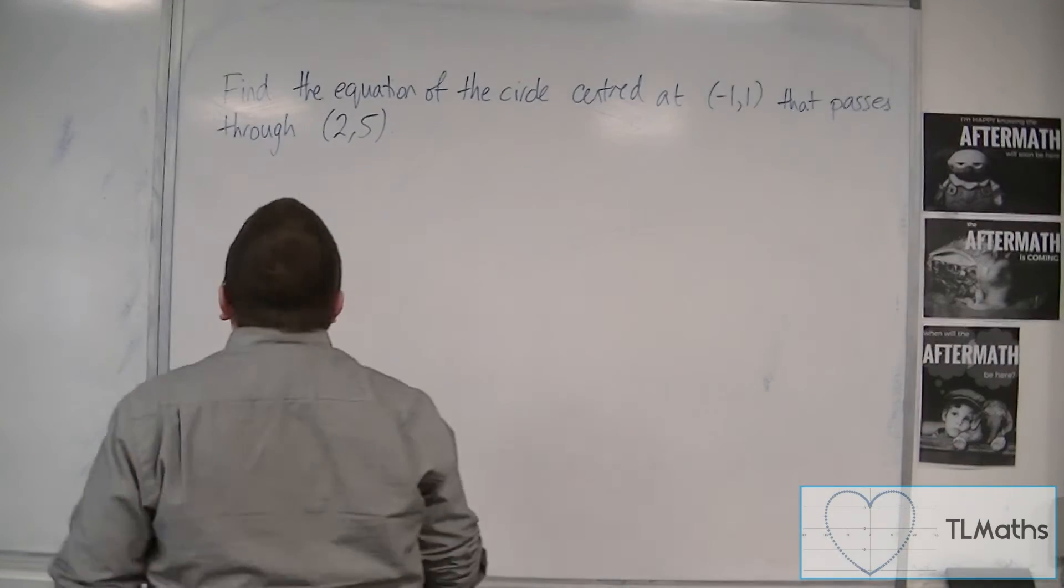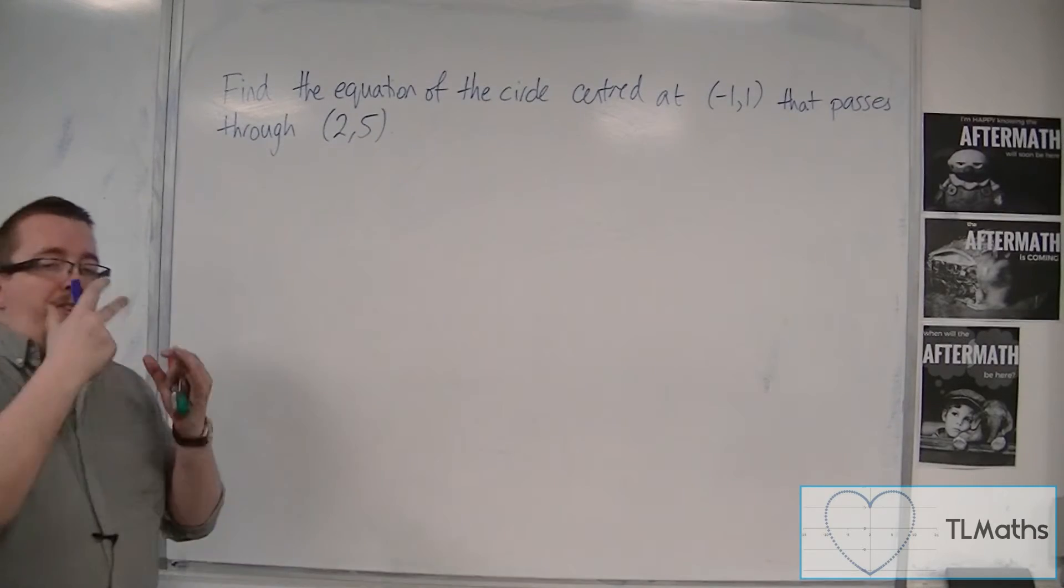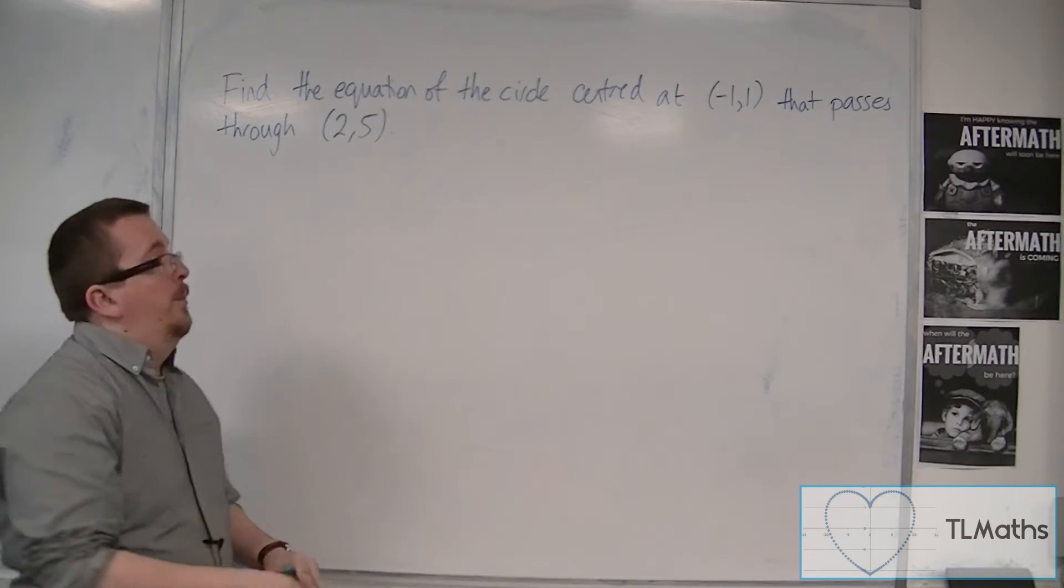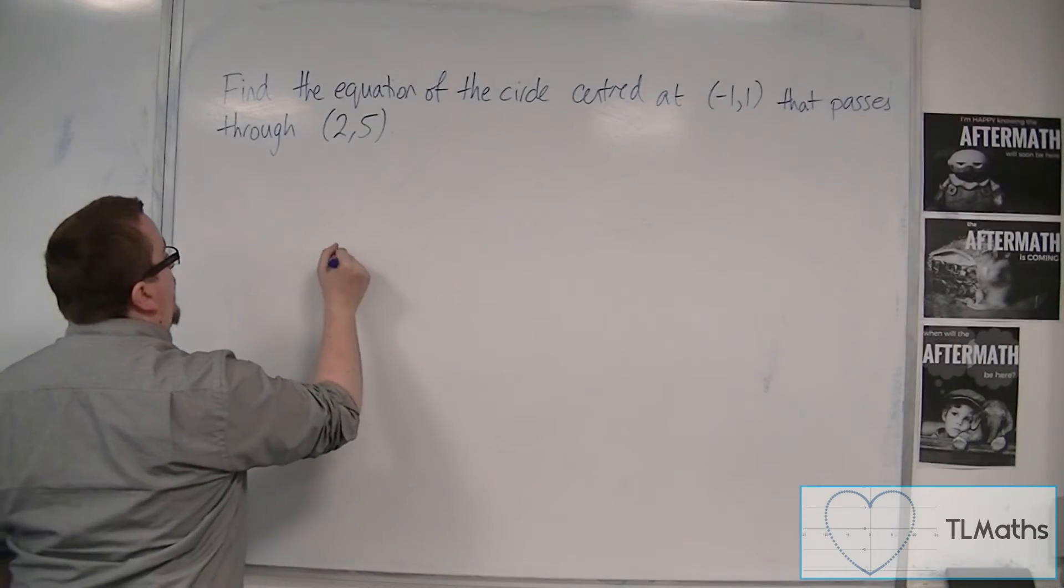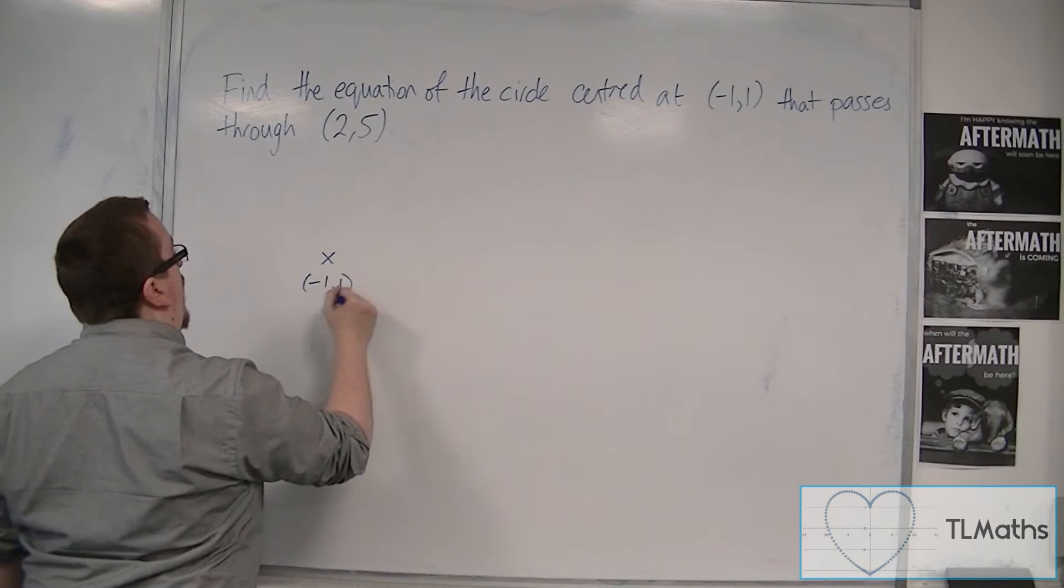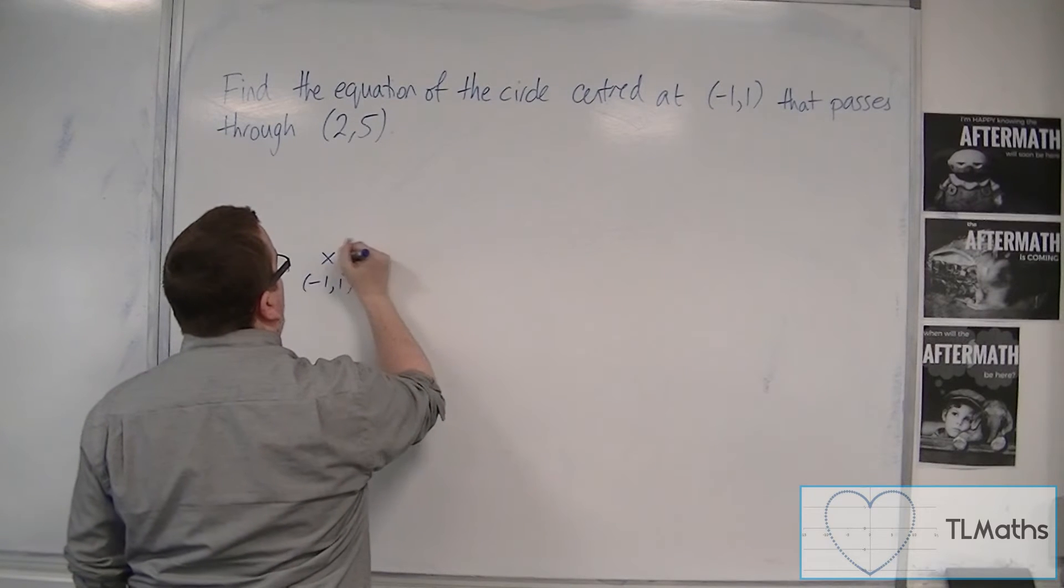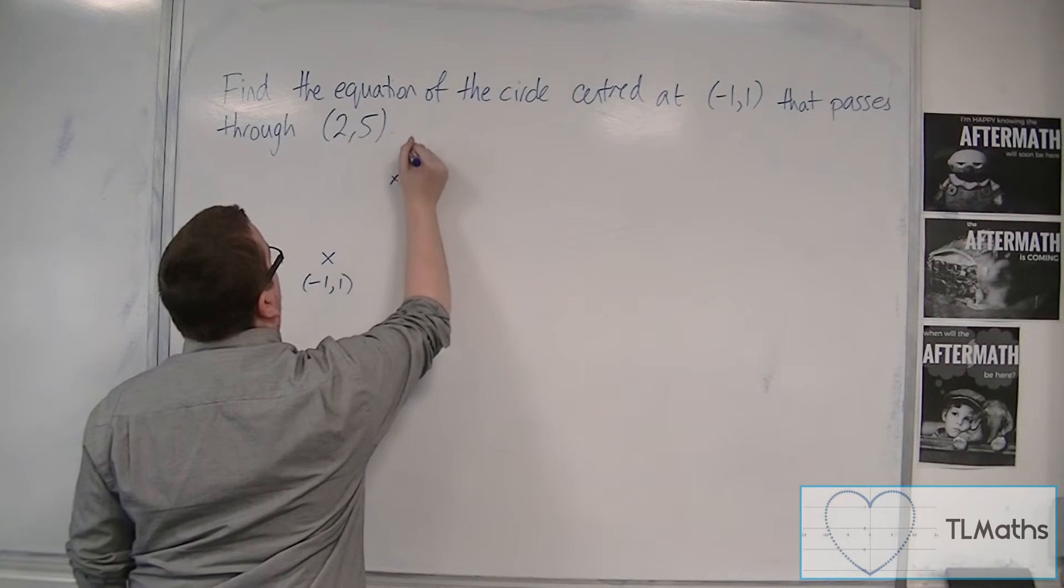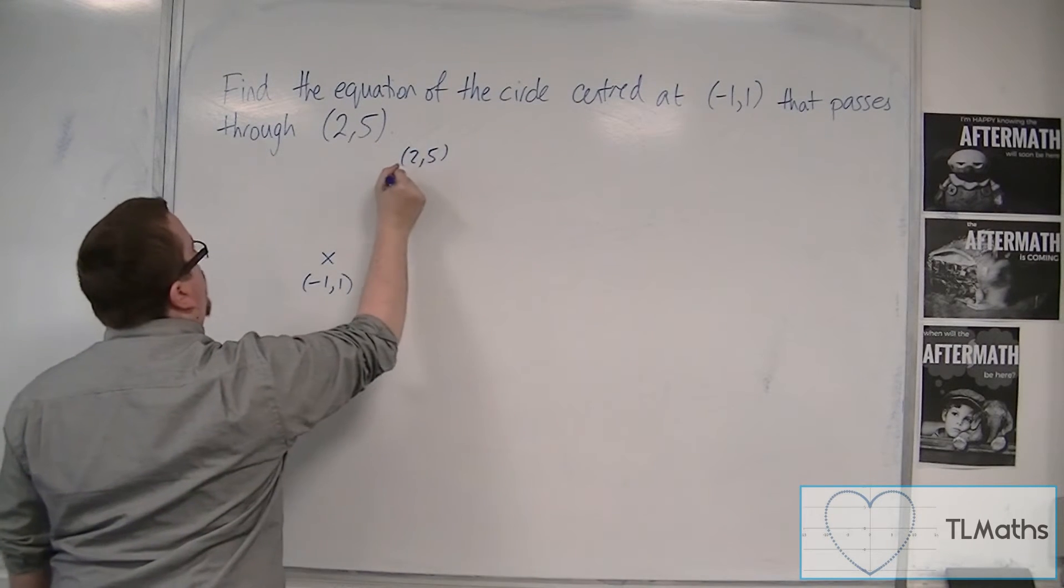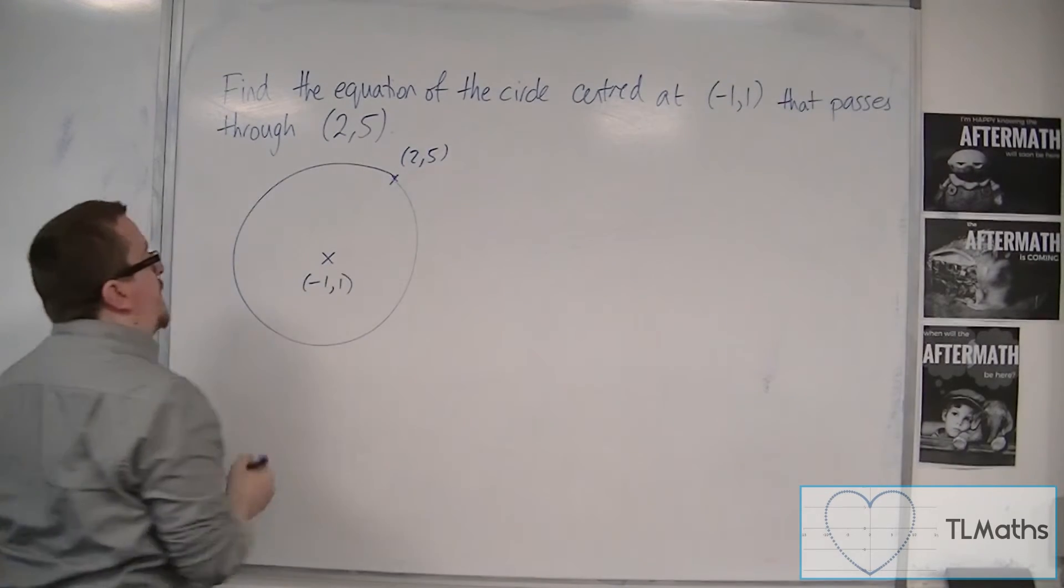In these types of problems, a diagram can really help. If we know that the center of the circle is at (-1, 1), and it goes through the point (2, 5), that'll be further along and up again, so that's (2, 5). And so we want to find the equation of this circle.